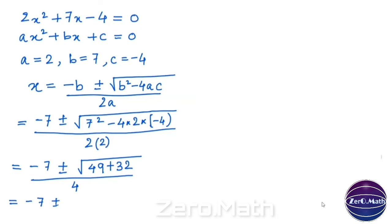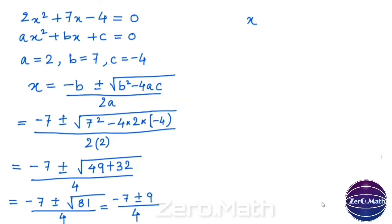Negative 7 plus or minus — now 49 plus 32 gives us 81. Root over 81 is a perfect square; 81 is the square of 9. So putting the value of root 81, that is 9, divided by 4. Taking the positive sign: negative 7 plus 9 divided by 4 becomes 2 over 4. Cancelling, 2 divided by 2 and 4 divided by 2, our answer becomes 1 over 2.